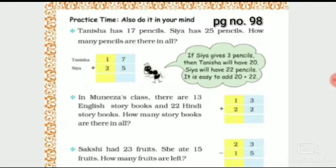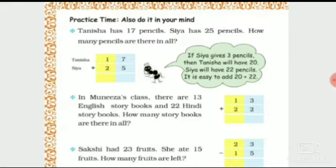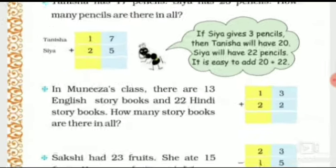The first one — let's read it. Tanisha has 17 pencils. Tanisha ke paas kitni pencils hai? 17. And Sia has 25 pencils. Sia ke paas 25 pencils hai. How many pencils are there in all? Total mila kar kitni pencils hai? So we will add both of them. 17 plus 25.